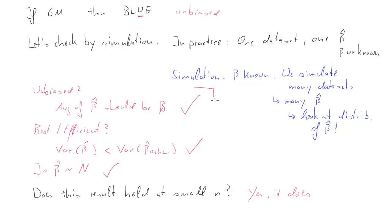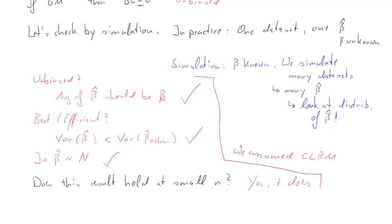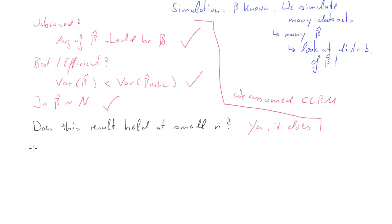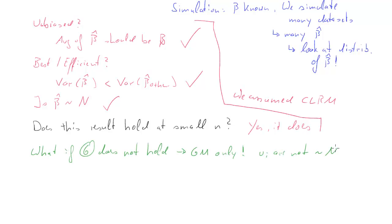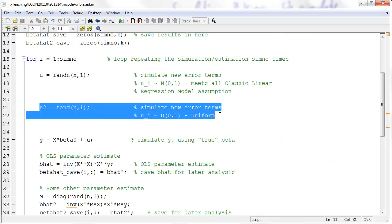So far, for all of this we assumed the classic linear regression model assumptions — CLRM. Now let's ask which of these findings can be maintained when we only assume Gauss-Markov assumptions, meaning the error terms are not necessarily normally distributed. We need to go back to our code and change it, and we'll ask: are the estimators still unbiased or efficient?